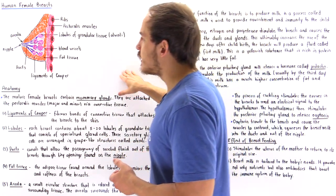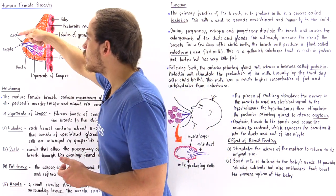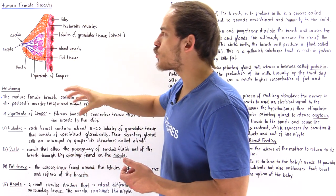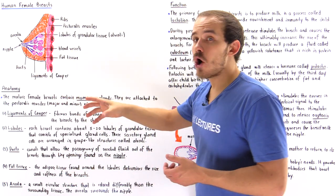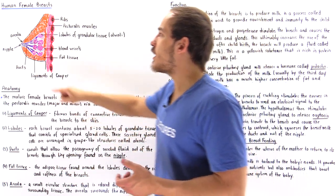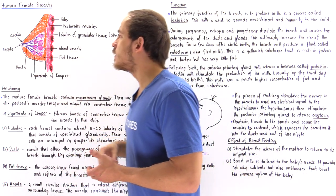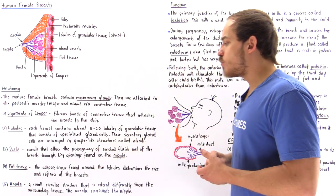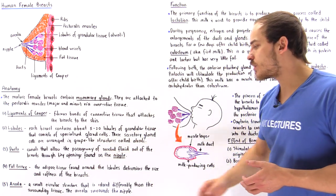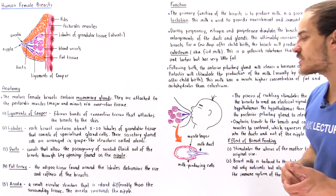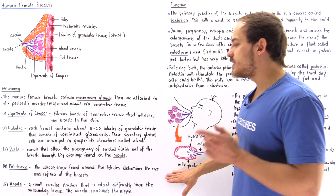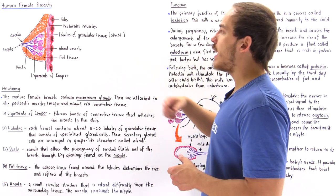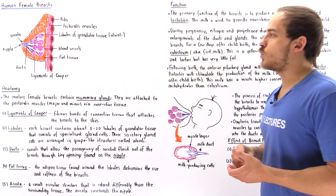Finally, around the nipple we have a relatively dark region of tissue known as the areola. The areola is a small circular structure that is colored differently than the surrounding tissue, found around the actual nipple.